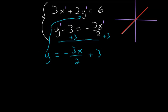And then if I plug this into my first equation, I would have 3x plus 2 times this new value of y, which is negative 3x over 2 plus 3. I put it all in parentheses, and this is equal to 6.